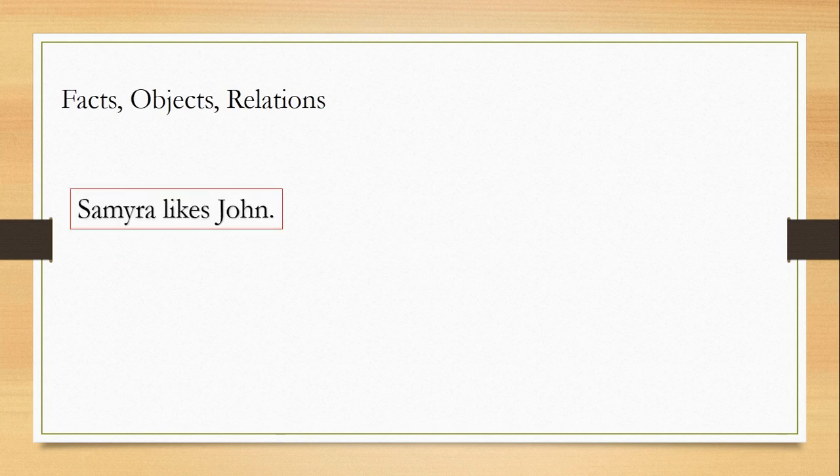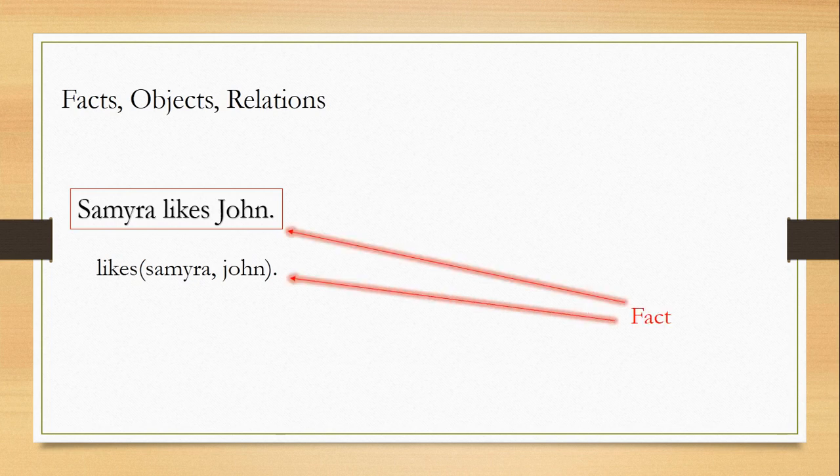Here I'm taking one example: Samaira likes John. I'm describing this sentence factually that Samaira likes John, written with a full stop. The same fact, I'm writing in Prolog form as likes(samaira, john) ending with a full stop, that is called a period. Both these statements resemble the same thing, called a fact. The period or full stop at the end denotes that this whole statement is actually called a fact.